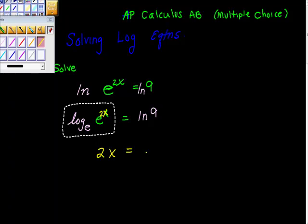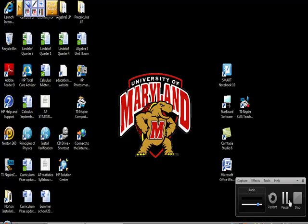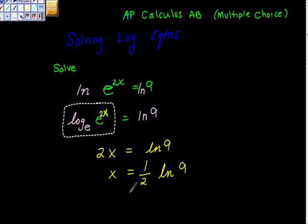Is equal to ln of 9. So far, so good. Here, what I'm going to do is divide both sides by 2. So we get x is equal to, my division by 2, I'm going to call that 1 half here. And I'm going to call that ln of 9.